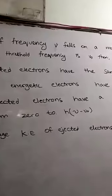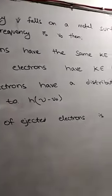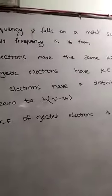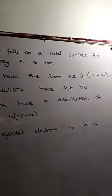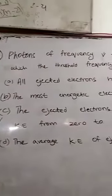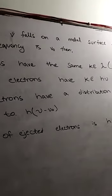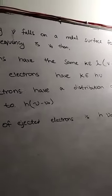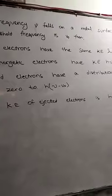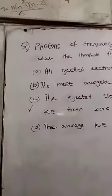Photon of frequency nu or f falls on a metal surface for which threshold frequency is nu not. Threshold frequency? Minimum frequency which after electrons emit. Then, in the option here.